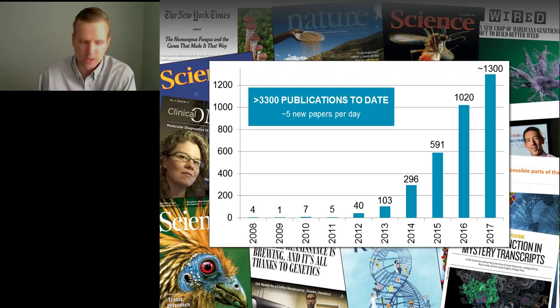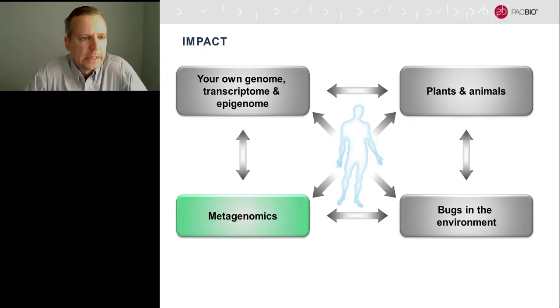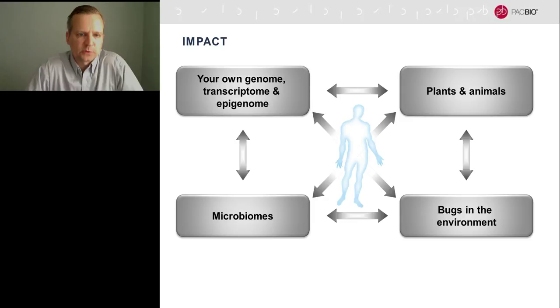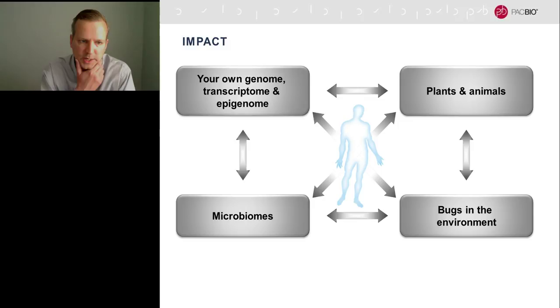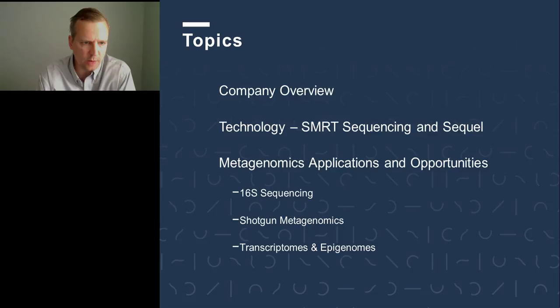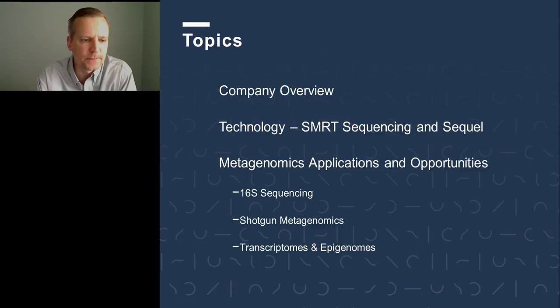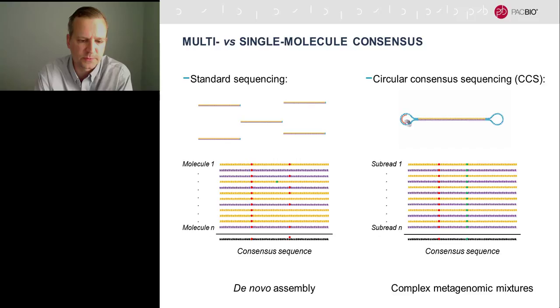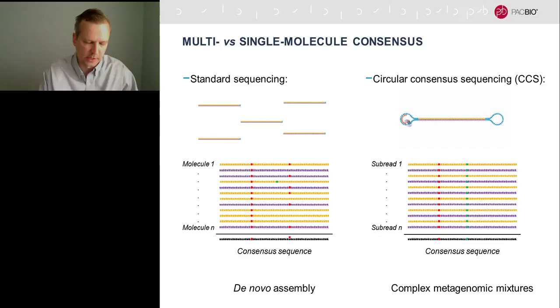Today I'll focus on metagenomics specifically, covering three topics: targeted 16S gene sequencing for classification, shotgun metagenomics, and emerging opportunities in transcriptomes and epigenomes of metagenomic communities. To highlight PacBio's unique ability to get highly accurate results from complex communities, I want to introduce circular consensus sequencing — another way of obtaining sequencing consensus with PacBio.